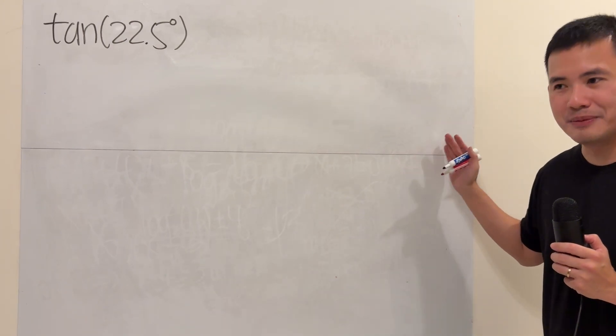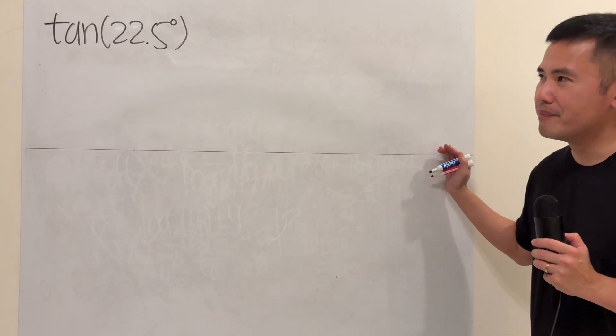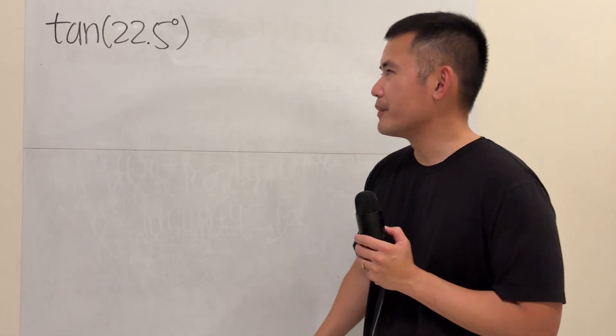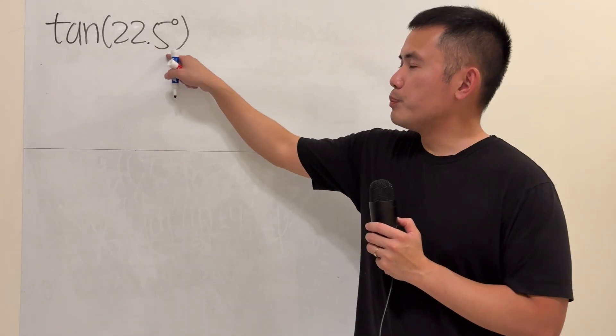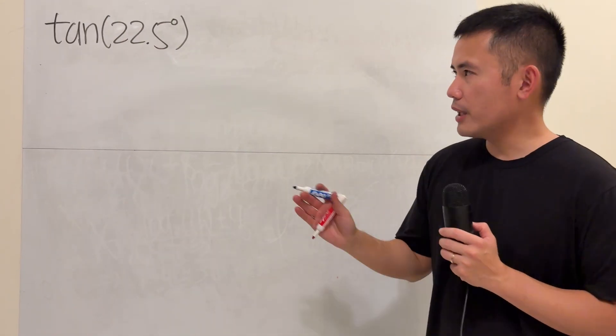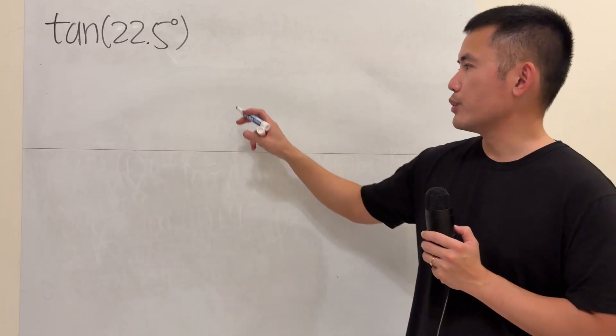And then later on, I will still show you guys the half-angle formula way. But anyways, let's have a look right here. 22.5, you should kind of relate that to 45 degrees, and this is how we can do it.